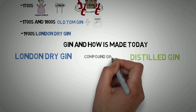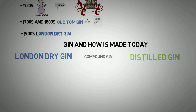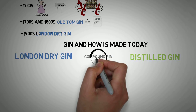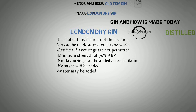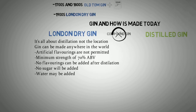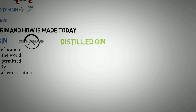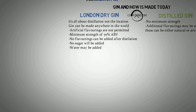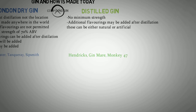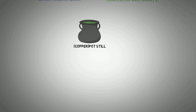Compound gin is the cheapest gin you can find on supermarket shelves — they use essences and extracts, so we try to avoid that. London dry gin is all about the distillation process, not the location — nothing can be added after distillation apart from water. Distilled gin, on the other hand, may have additional flavorings added after distillation, either natural or artificial.